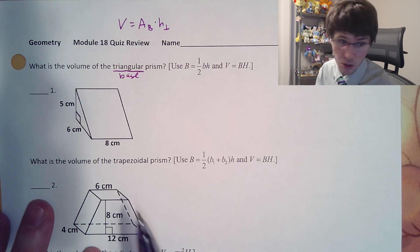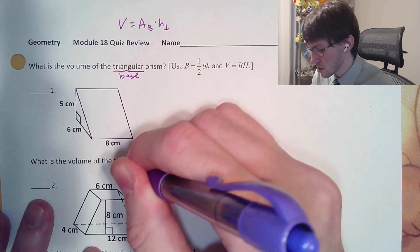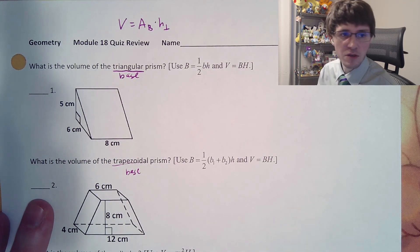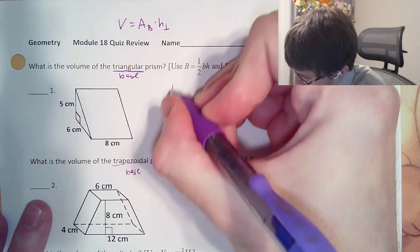Now you could have figured that out from the wording of the question because it says triangular prism, that has to be the base. Likewise, in the next problem, it says trapezoidal prism, so that has to be the base of this one. And that's going to be very common throughout these types of problems.